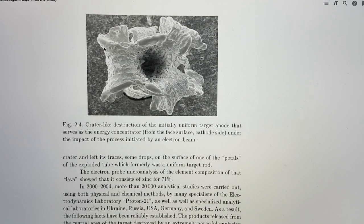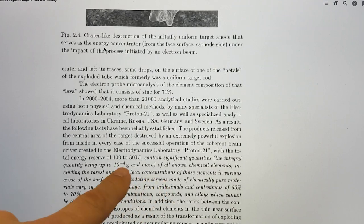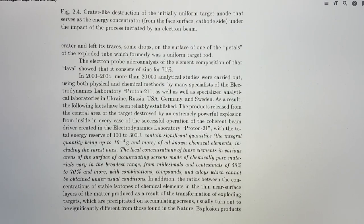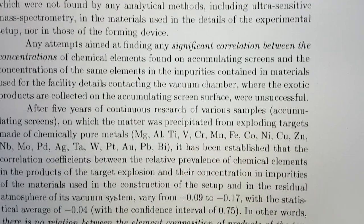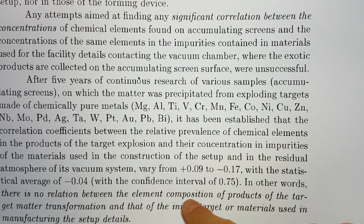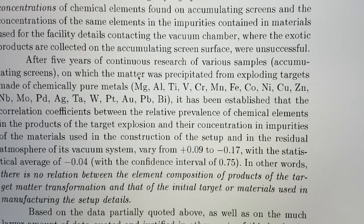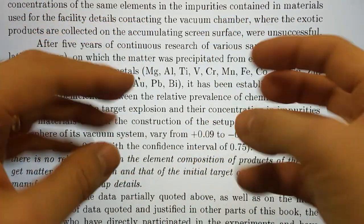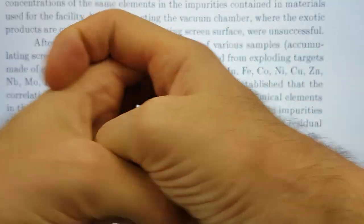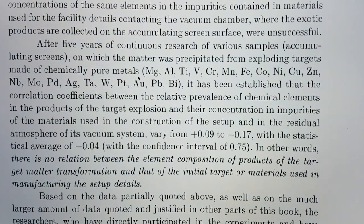Here we can see a page from Controlled Nuclear Synthesis Breakthroughs in Experiment and Theory by S.V. Adamenko et al., Proton-21 Labs. Here's the typical target in grayscale on the SEM. He's saying they used 100 to 300 joules of energy. It doesn't matter what targets they had, whether it was made of magnesium all the way through to tungsten. There is no relation between the element composition of products of the target matter transformation and that of the initial target or materials used in manufacturing the setup details. This is the case for his work because he's getting to the point of such intense, in my view, EVO activity that it's causing self-compression. You will get supernova outputs as observed by him and Leclerc in water cavitation.